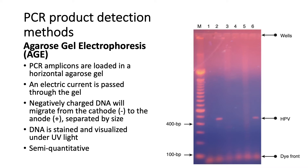Once we have finished our PCR reaction, we are left with PCR products or PCR amplicons. Because our amplicons are too small to be seen by the naked eye, we need a way to detect them. The first method is agarose gel electrophoresis, or AGE. The PCR amplicons are loaded into a horizontal agarose gel in wells at the top. An electric current is passed through the gel, and negatively charged DNA migrates from the cathode at the top to the anode at the bottom. As the DNA moves across the gel, they are separated by size — larger fragments are retained near the top, while smaller fragments migrate toward the bottom.